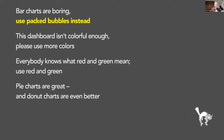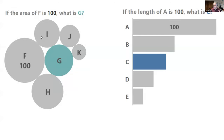Bar charts are boring — use pack bubbles instead. This is something I do in my workshops. If we had a little more time I'd have you participate. Part of having data visualization is to be able to make comparisons quickly and accurately. If F is 100, how big is G? You're looking at two different-size circles. And if A is 100, how big is C? I'll give them 15 to 20 seconds to figure it out. I've now done this with over 3,500 people. Here are the results — newsflash: people are terrible at judging the area of circles. They're amazing, without training, at judging the length of bars.